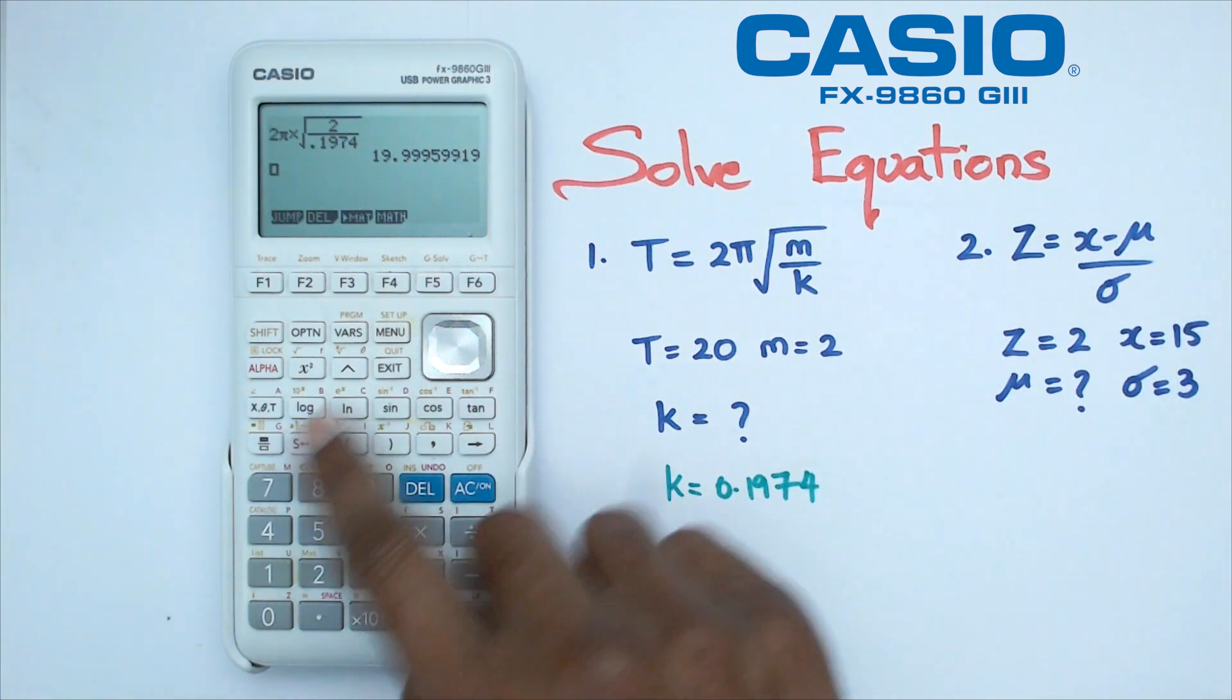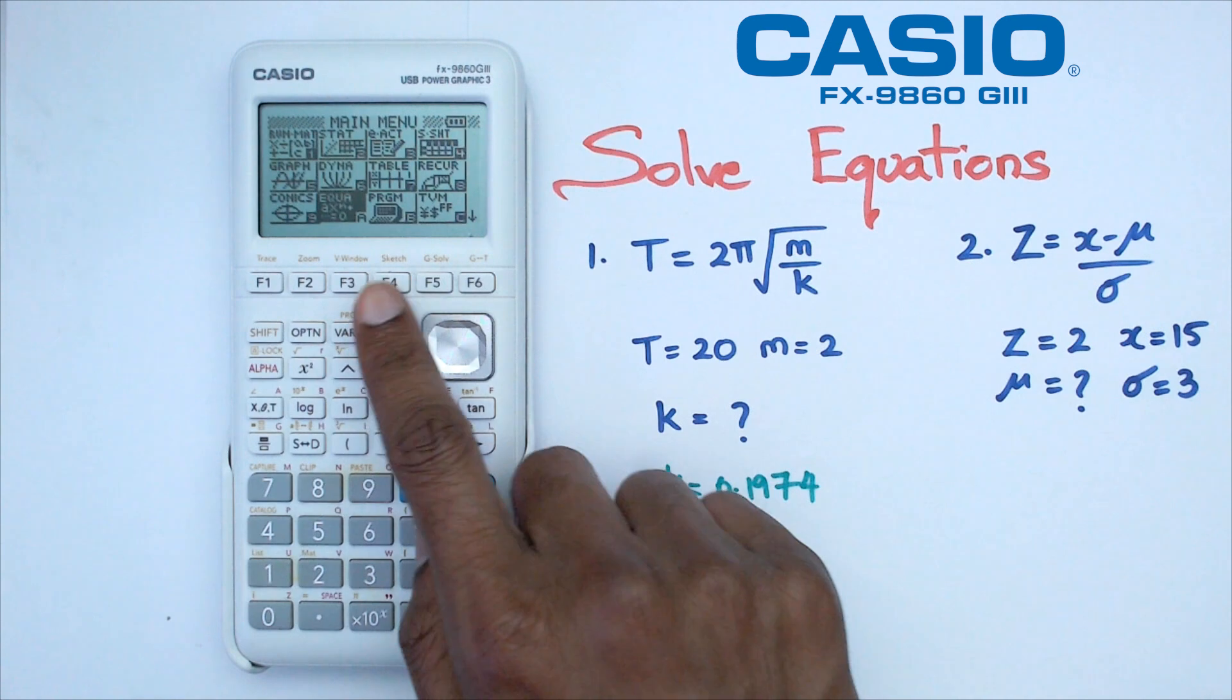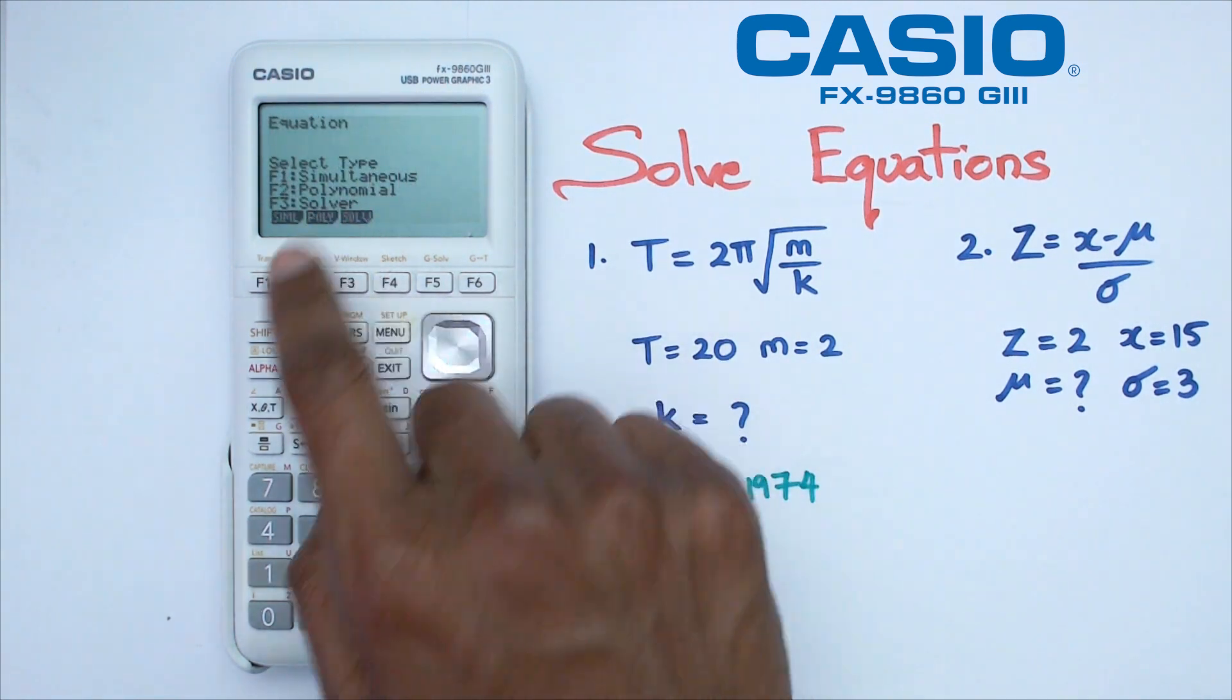All right, let's try number two here. Going to menu, going down to equation, we're going to click on F3, which is the solver.